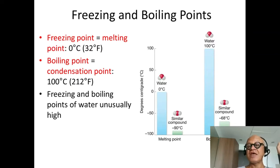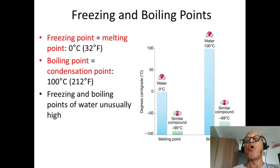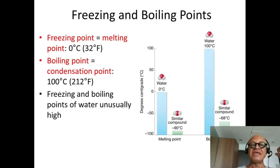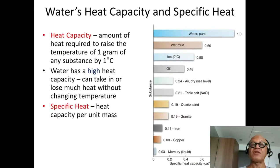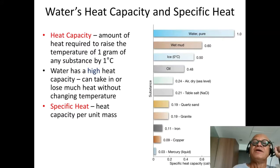So water should freeze at minus 90 degrees centigrade and boil at minus 68 degrees centigrade. Thank goodness that doesn't happen, because everything on Earth would be very different if it did. Heat capacity, or specific heat, is how fast a substance can warm or cool when you add heat to it.